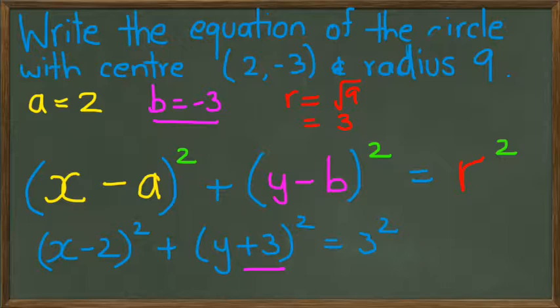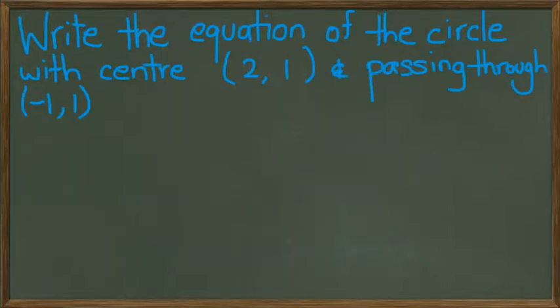Okay, moving on to another type of question. Write the equation of the circle with center (2, 1) and passing through (-1, 1).